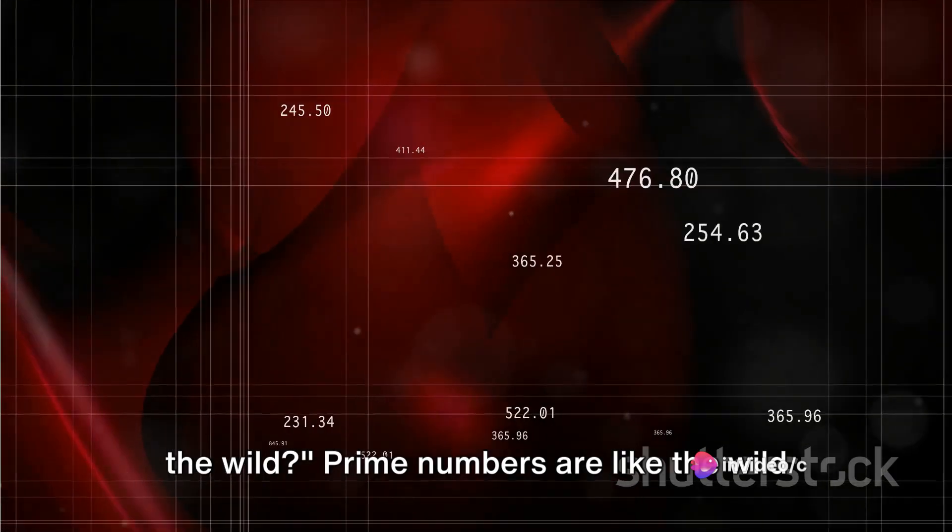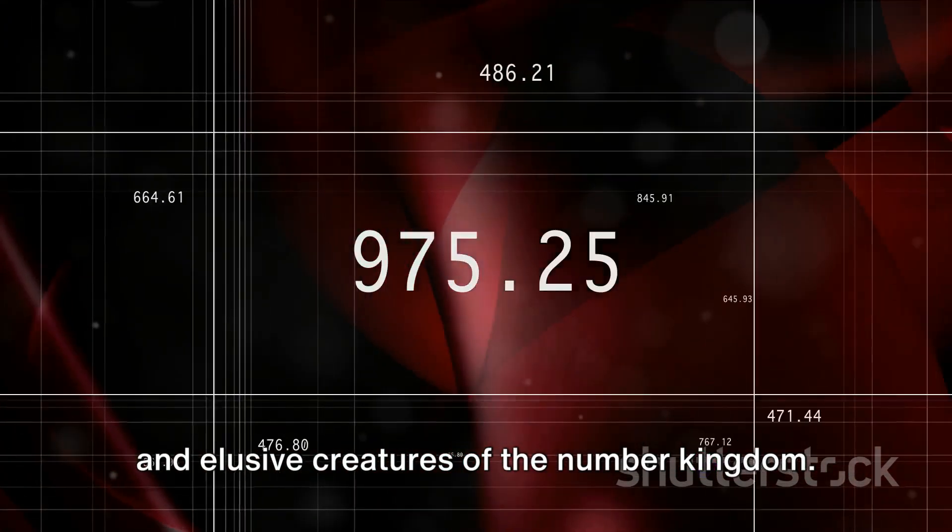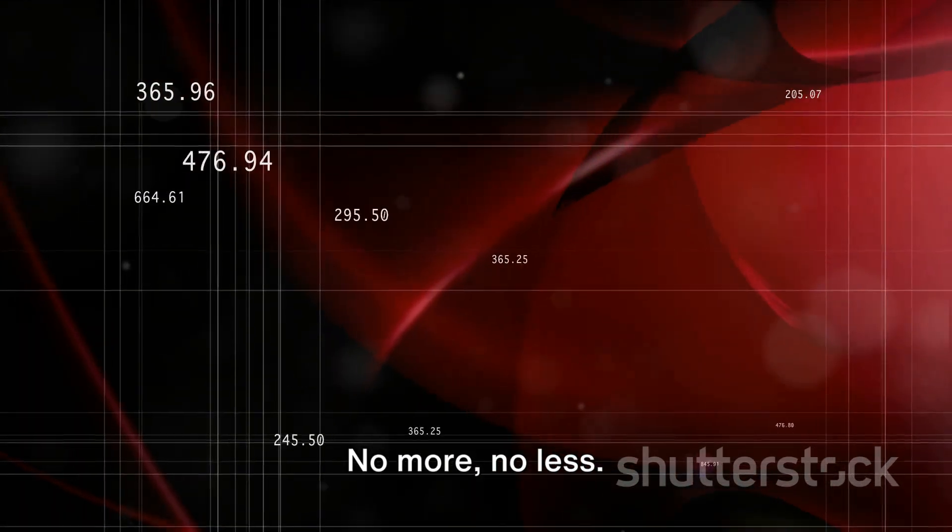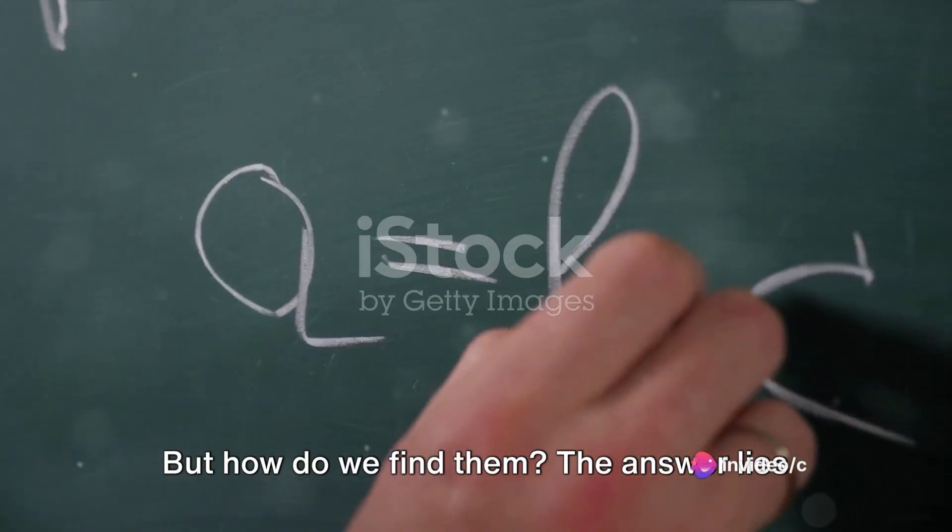Prime numbers are like the wild and elusive creatures of the number kingdom. They only have two factors, one and themselves. No more, no less. But how do we find them?